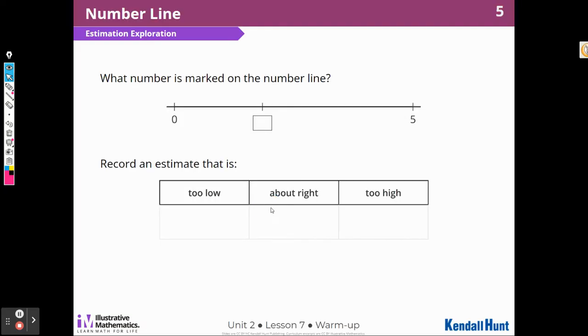So here is our warm-up. It says what number is marked on the number line, and we're going to estimate what number is too high, too low, and just about right. So when I think about this, I'm going to think about the question, is the number that goes in the box more or less than half of 5, and how do you know? So I notice that this is a 0, and this is not a 1, this is a 5. What is half of 5?